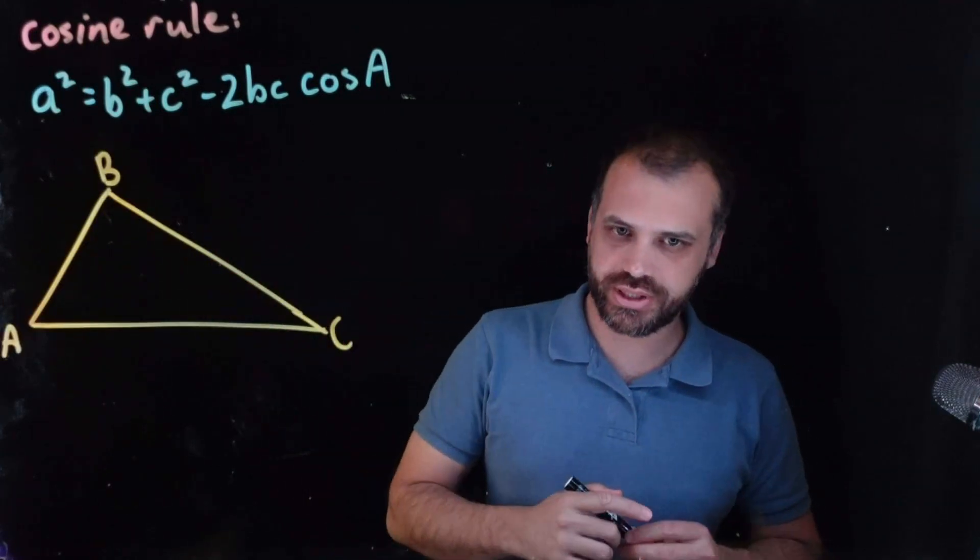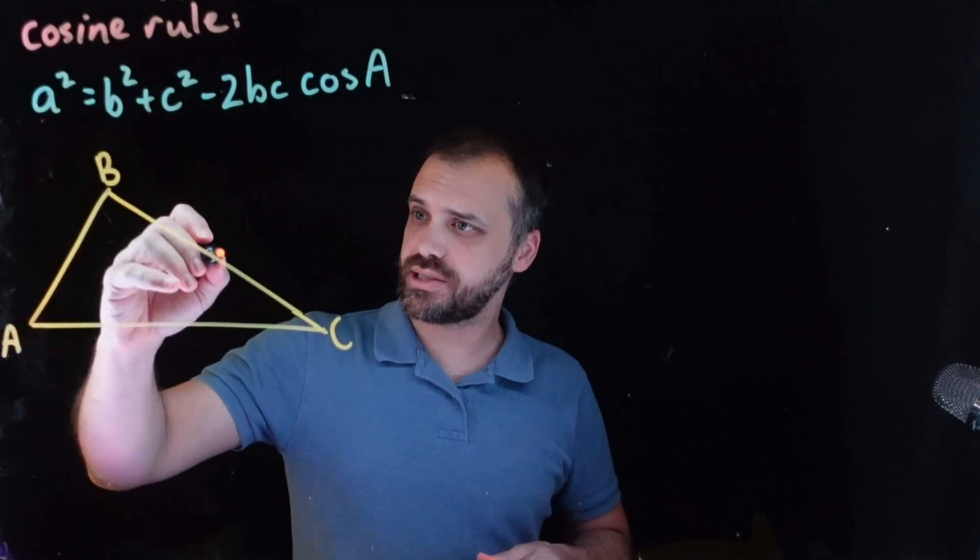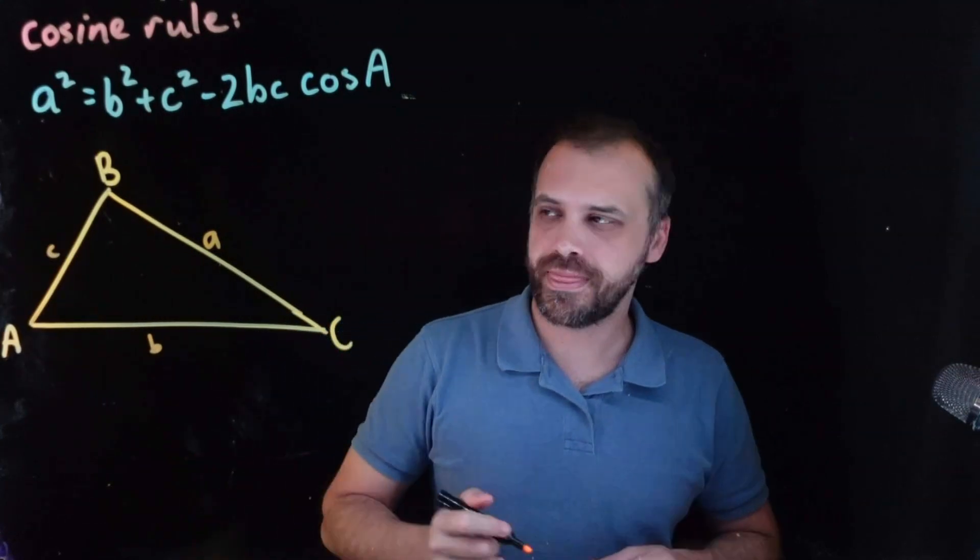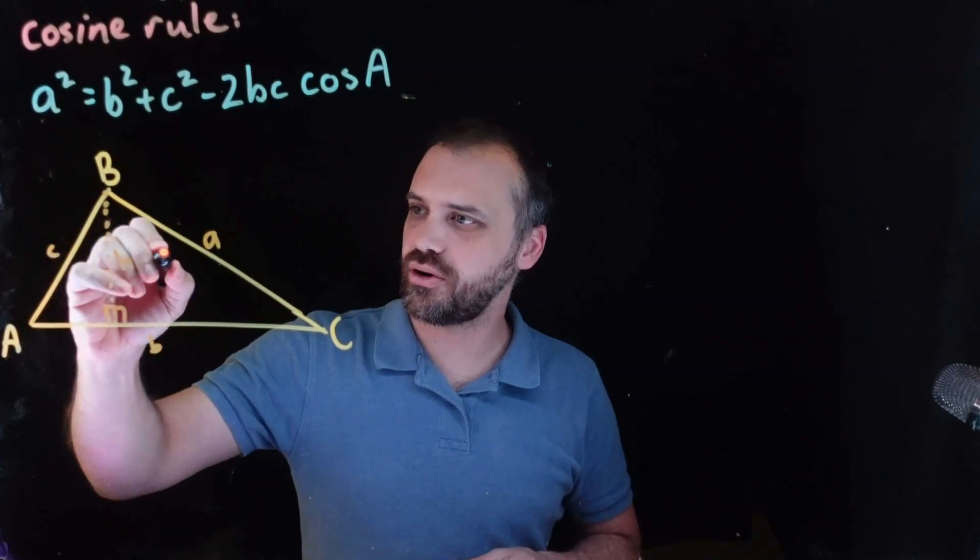So we can use a similar approach to what we did with the sine rule when we proved that. We can just say ABC, A length B length C here. And we can draw in a little line here, and we'll just call that our height.